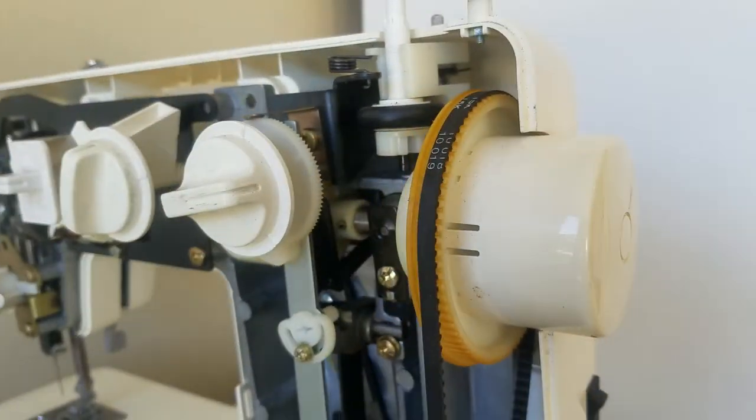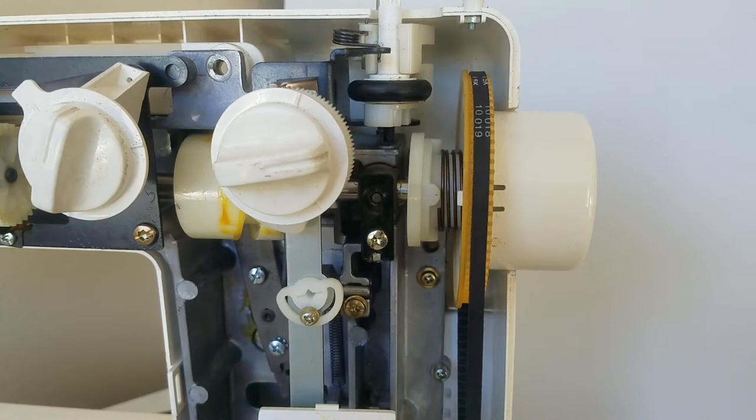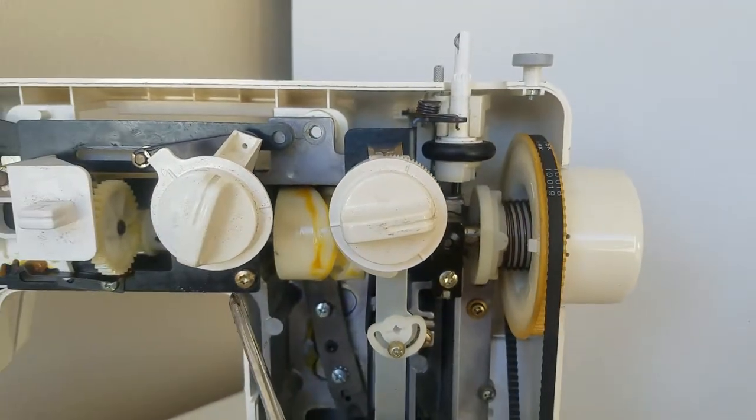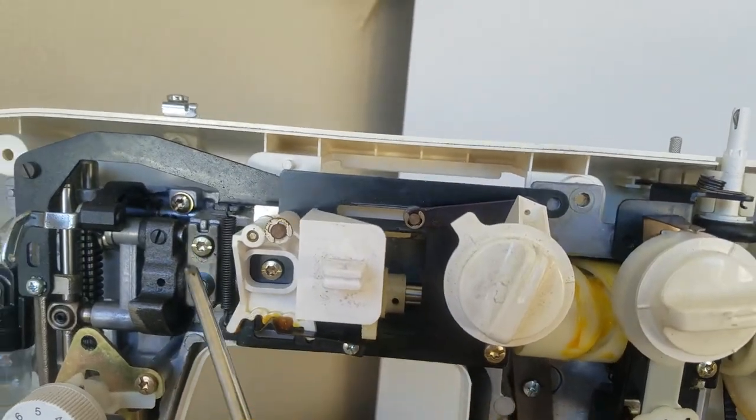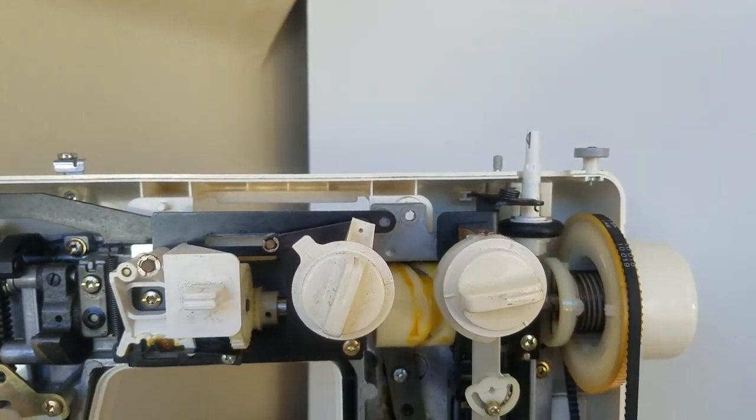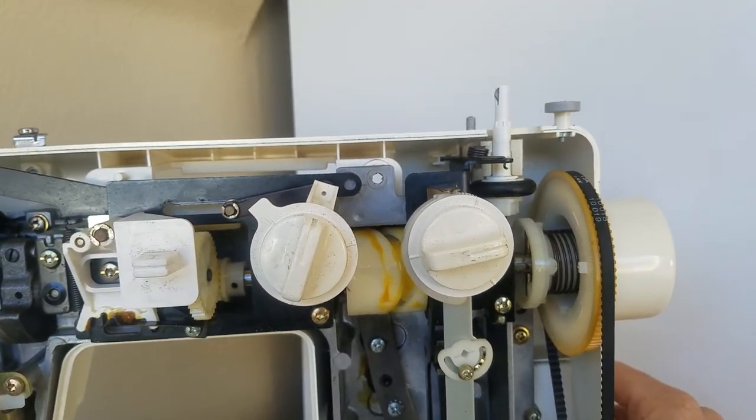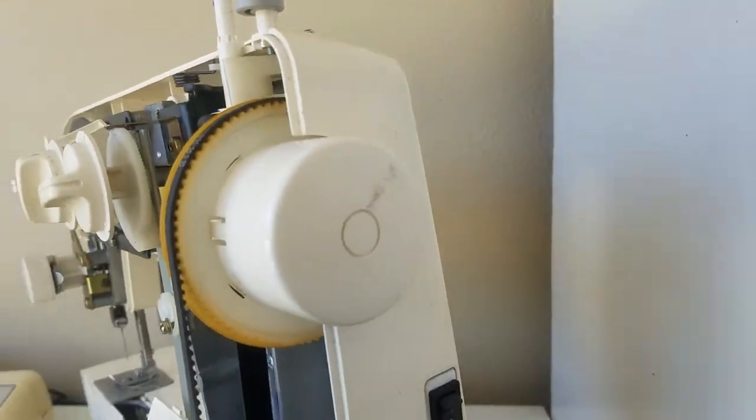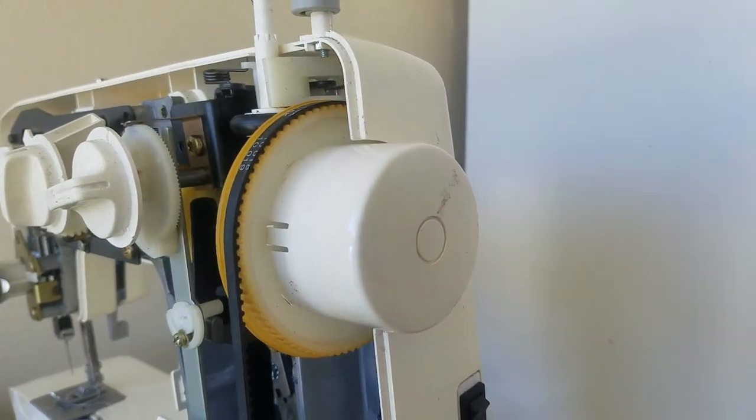But otherwise it looks like some serious surgery you'd have to take off. This over here, because you have to pull the whole shaft out just to wrap it around here. So I'm telling you, you got a sewing machine like that, just get a Dremel tool. It's poorly built. It should have had a slot around there anyway to do that.